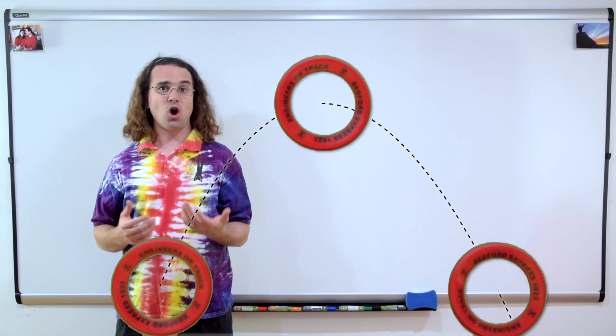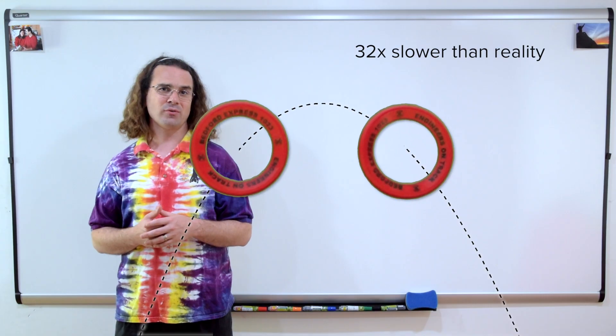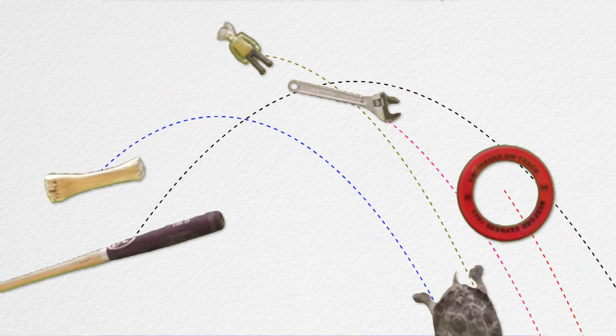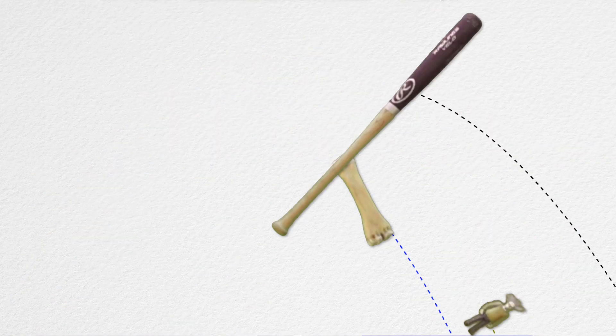I do want to point out that all of these examples are actually being shown at a speed 32 times slower than reality. Because when we look at them at real speed like this, it happens way too fast to understand what is happening.